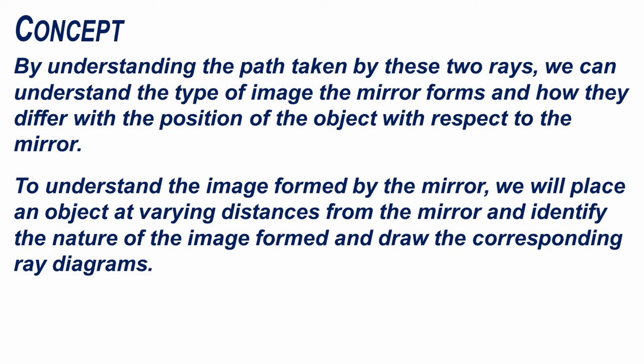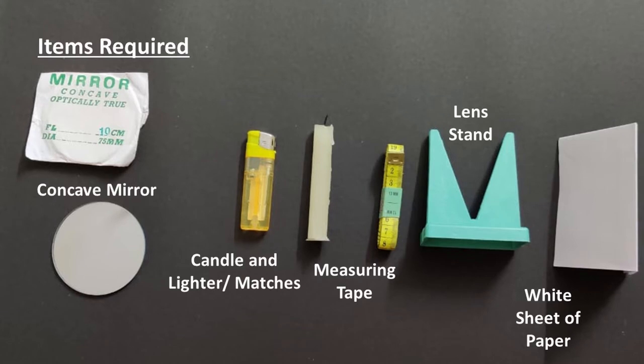To understand the image formed by the mirror, we will place an object at varying distances from the mirror, identify the nature of the image formed, and draw the corresponding ray diagrams. For this, we will need a concave mirror with a focal length of 10 centimeters — given on the packaging or mirror cover — a white sheet of paper acting as the screen, a candle and lighter or matches, a lens stand or piece of thermocol to hold the mirror, and a measuring tape. If a measuring tape is not available, draw a line on a large sheet of paper or on the floor using chalk and a ruler.